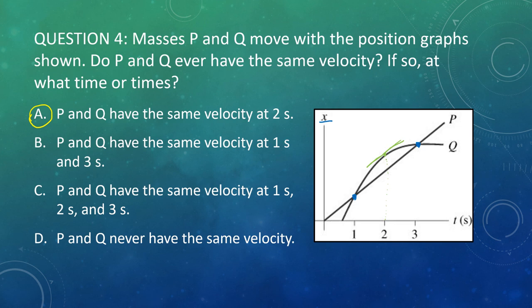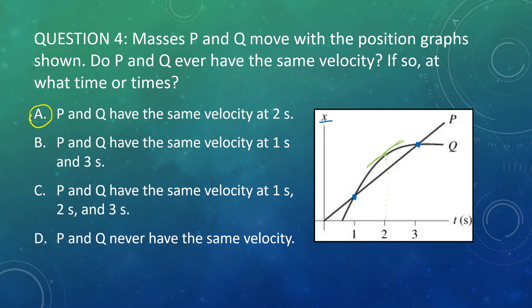This is a question you'd actually see on a standardized physics test. At 1 and 3 seconds the lines overlap on this position graph — that's where they have the same position. But we're talking velocity, which from a position graph is the slope. They have the same slope at 2 seconds. Since velocities are changing, we use a special name for that — which is the entire basis of our next lecture on acceleration. Thanks for watching, and have a great day.